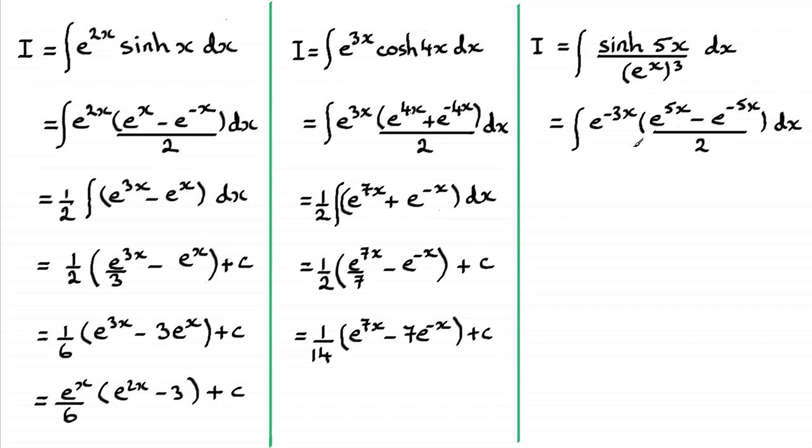Now I can just pull out my half, expand the bracket as we've done before, and you're going to get half the integral of e to the power 2x minus e to the power minus 8x. We're integrating that all with respect to x, and if you do that, you should get a half e to the 2x over 2 plus e to the minus 8x plus that c.